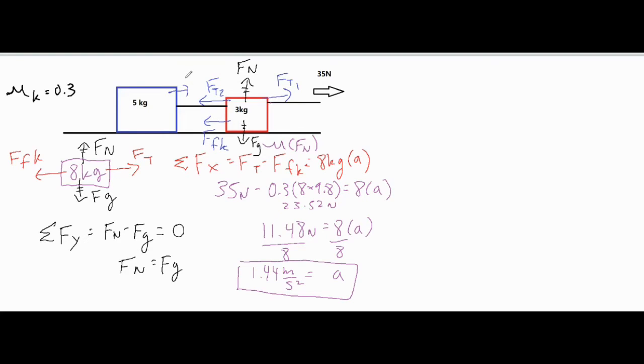For our second block, we have this same force from this string FT2, the tension, except this one is pulling it to the right. We have the force of kinetic friction opposing the slide, and then we also have the normal force and the force of gravity that are equal and opposite to one another.